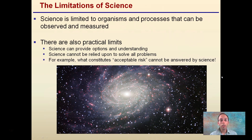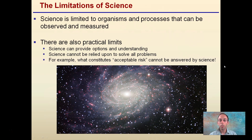Limitations of science: science is limited to organisms and processes that can be observed and measured. There are also practical limits — scientists can improve options and understanding, but cannot be relied upon to solve all problems. For example, what constitutes acceptable risk cannot be answered by science. You get into that when evaluating certain experiments or scenarios — science really can't answer what's acceptable risk.